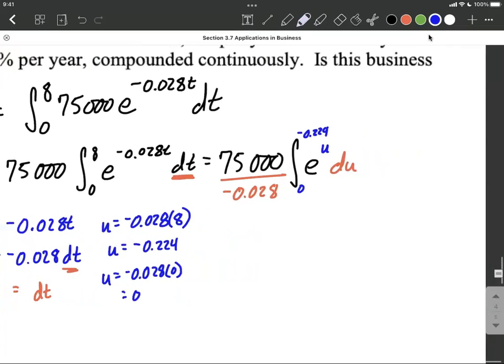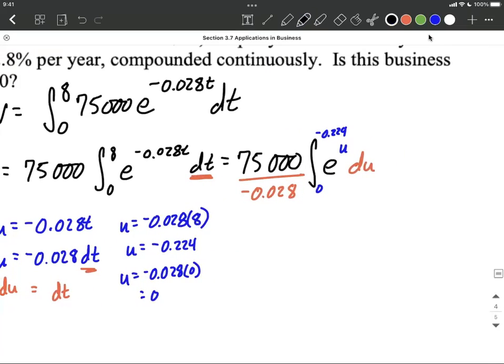Next, let's go ahead and integrate here. Now, the integrating, because we have E to a power, is going to be very easy. It's going to be 75,000 over negative 0.028, E to the U power, evaluated between 0 and negative 0.224.